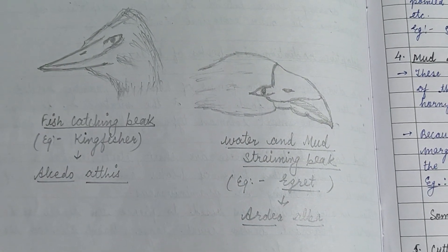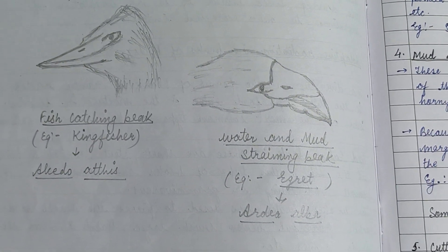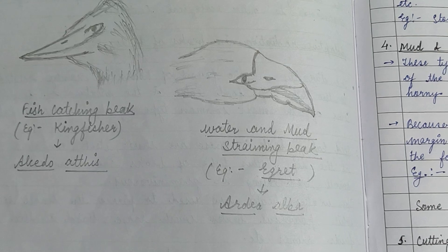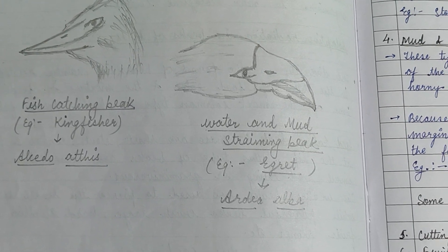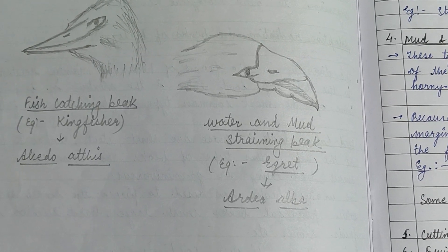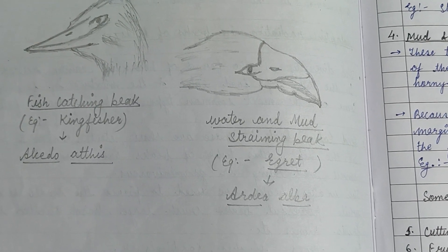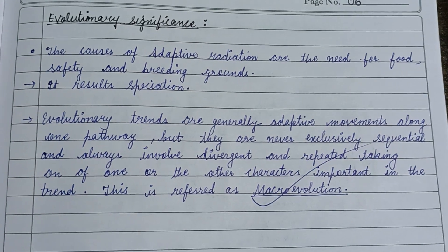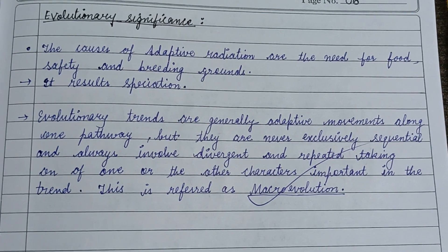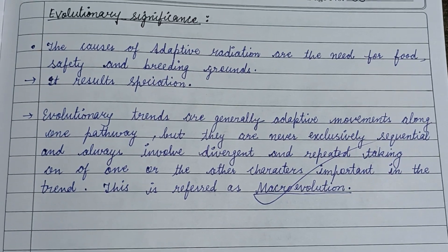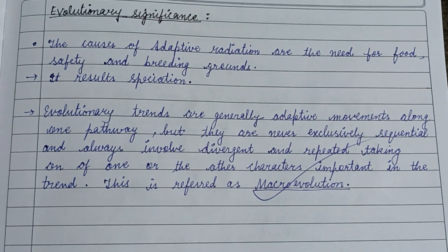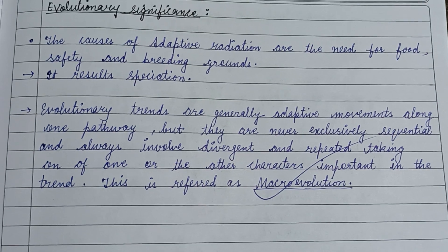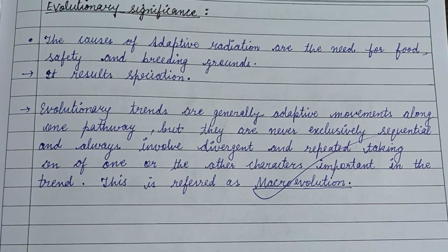The kingfisher, with scientific name Alcedo atthis, has a fish catching beak, while the water and mud straining beak is seen in the egret, known as Ardea alba.